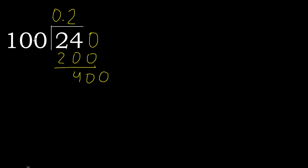400. 100 multiplied by 4 is 400. Subtract: 0. Therefore finish it.